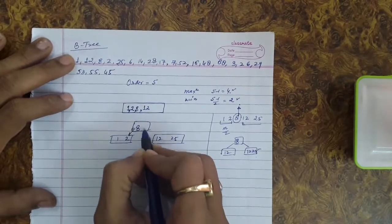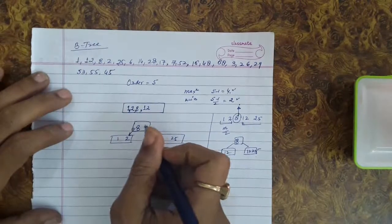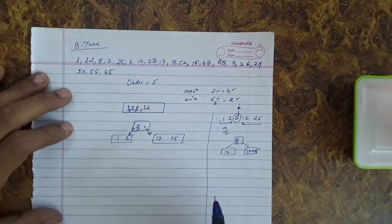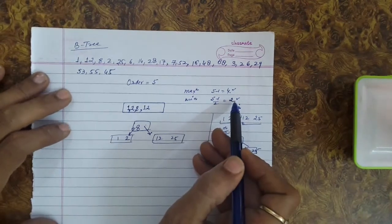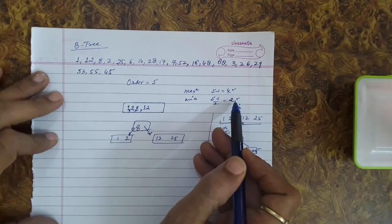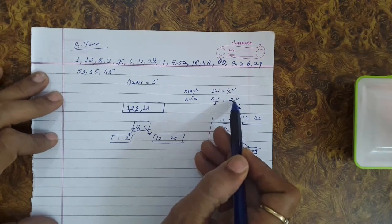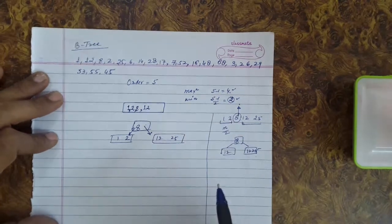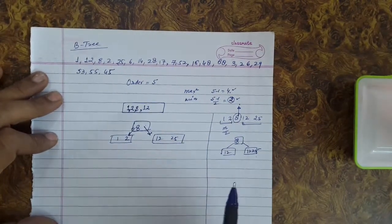The tree height has grown by 1. You can see the root node is violating the minimum condition, but this is allowed — a root node can violate the minimum condition. We defined that any node can have a minimum of 2 keys, but the root node is containing just 1 key, which is allowed.